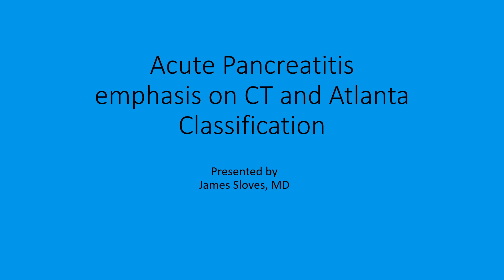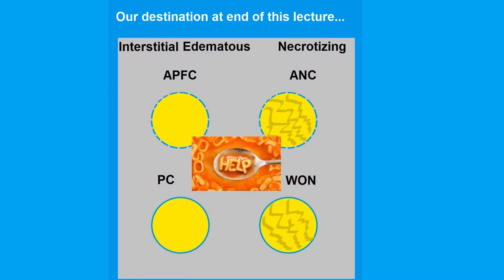This presentation will be about acute pancreatitis with an emphasis on CT and the relatively new Atlanta classification and nomenclature. The Atlanta classification divides pancreatic fluid collections into four different types with acronyms that you can see on the slide.